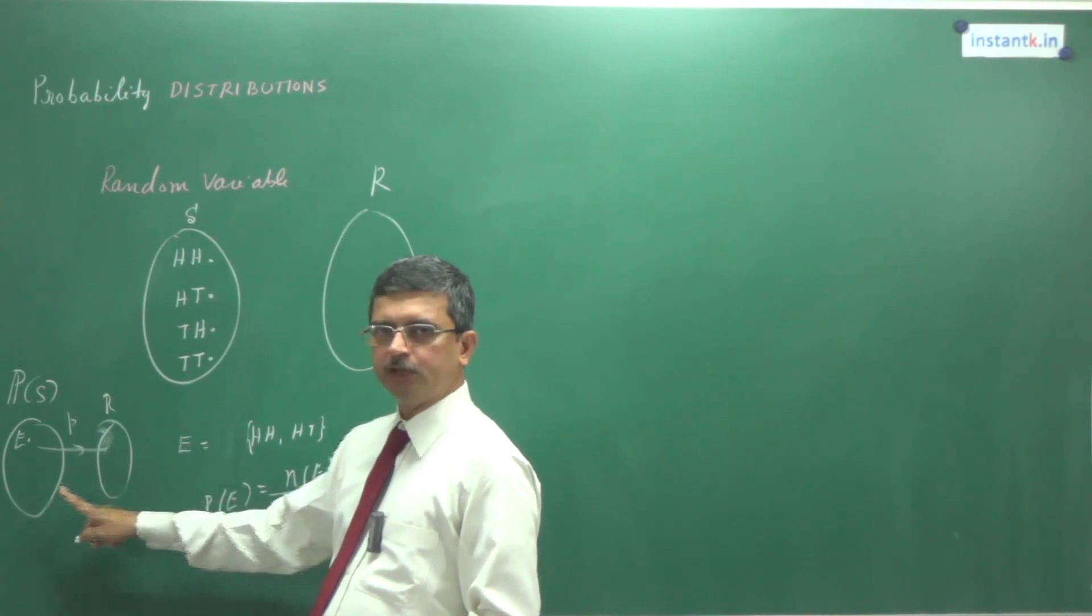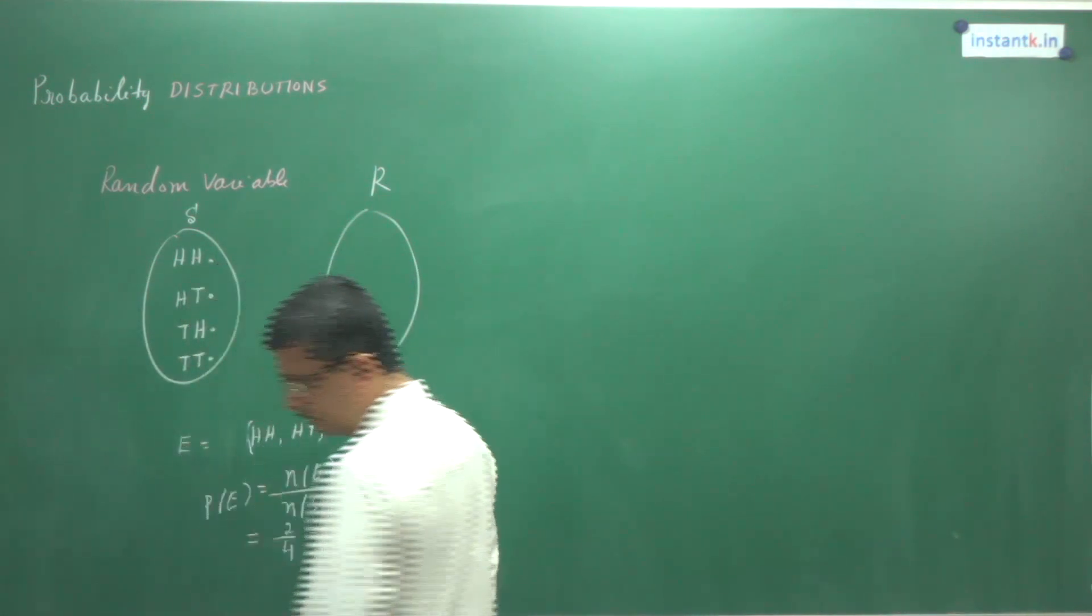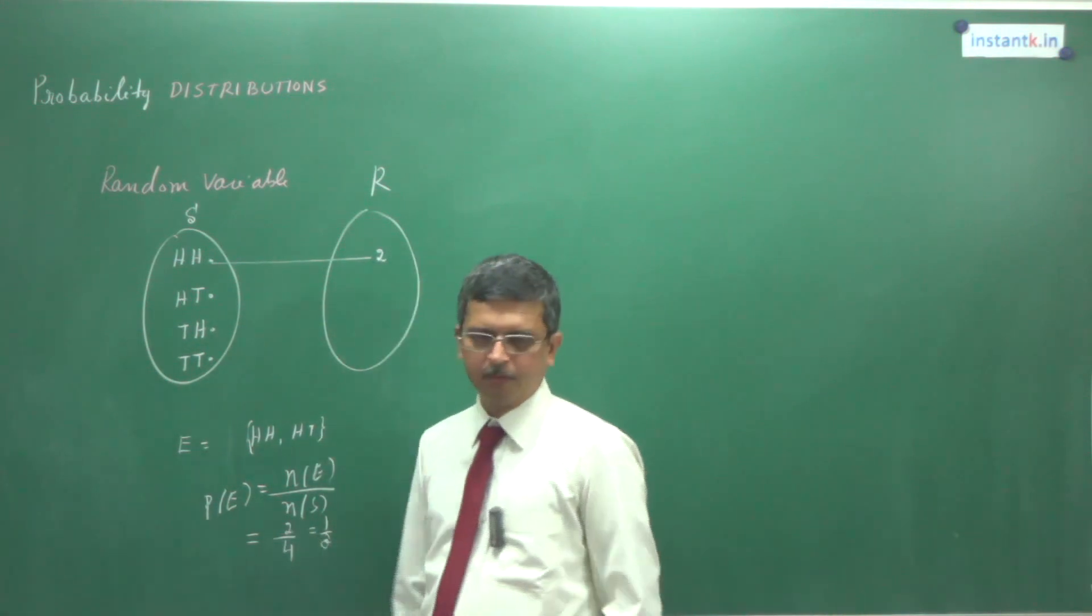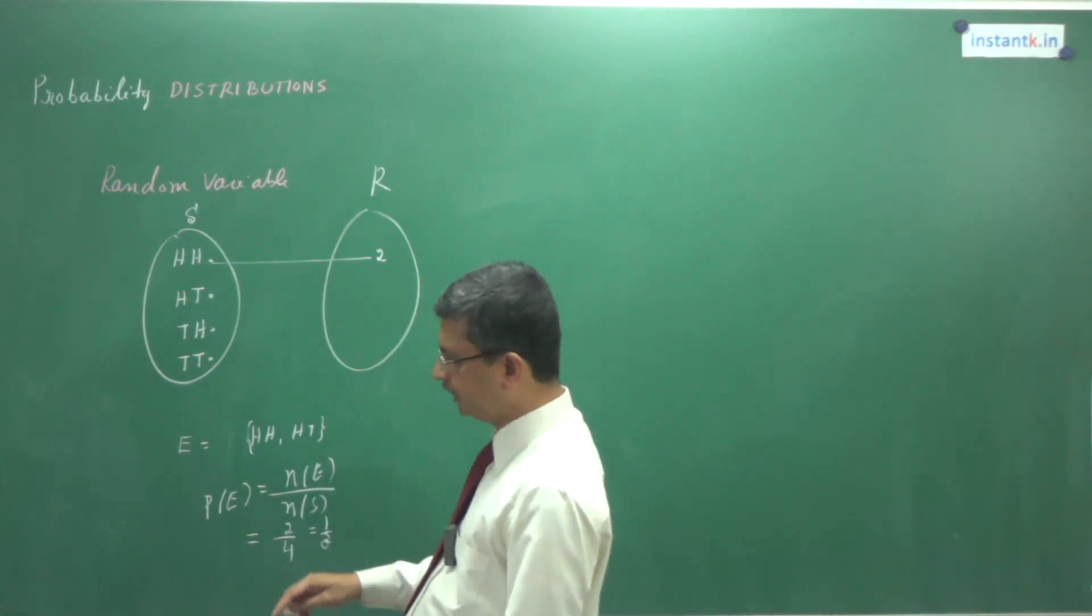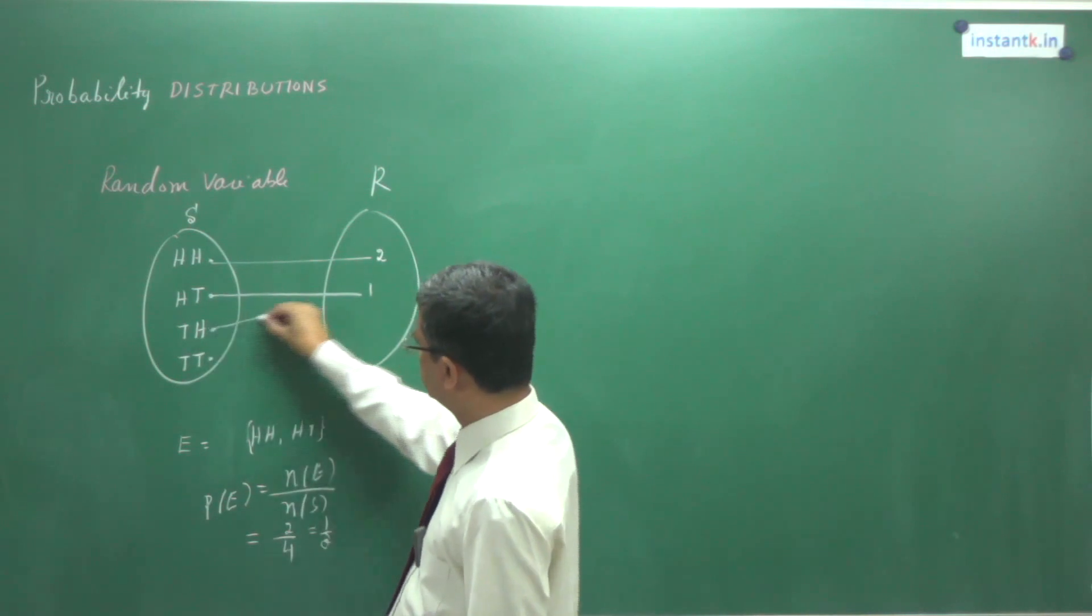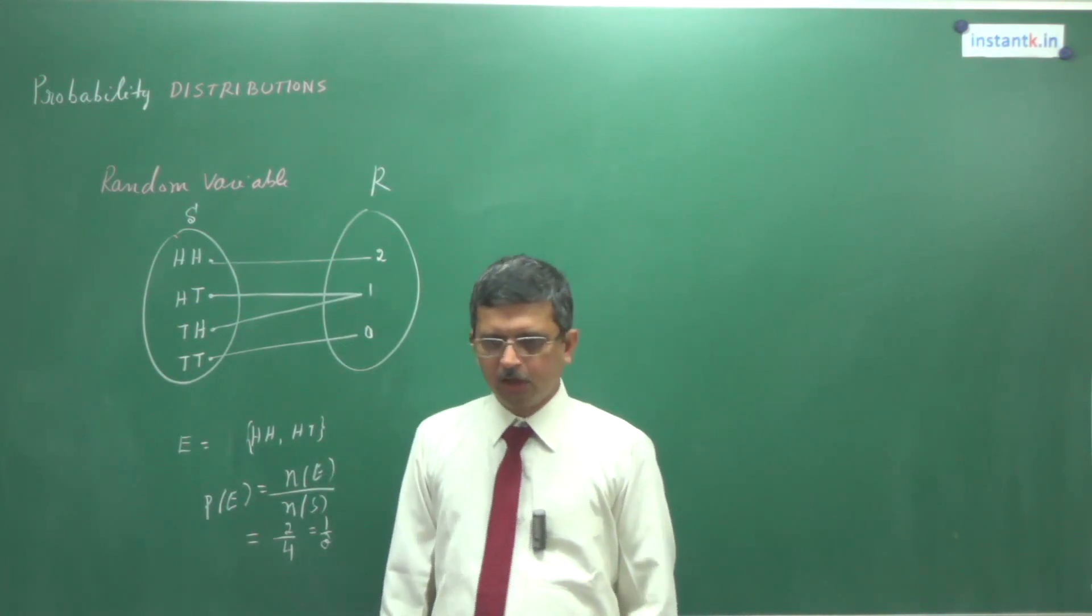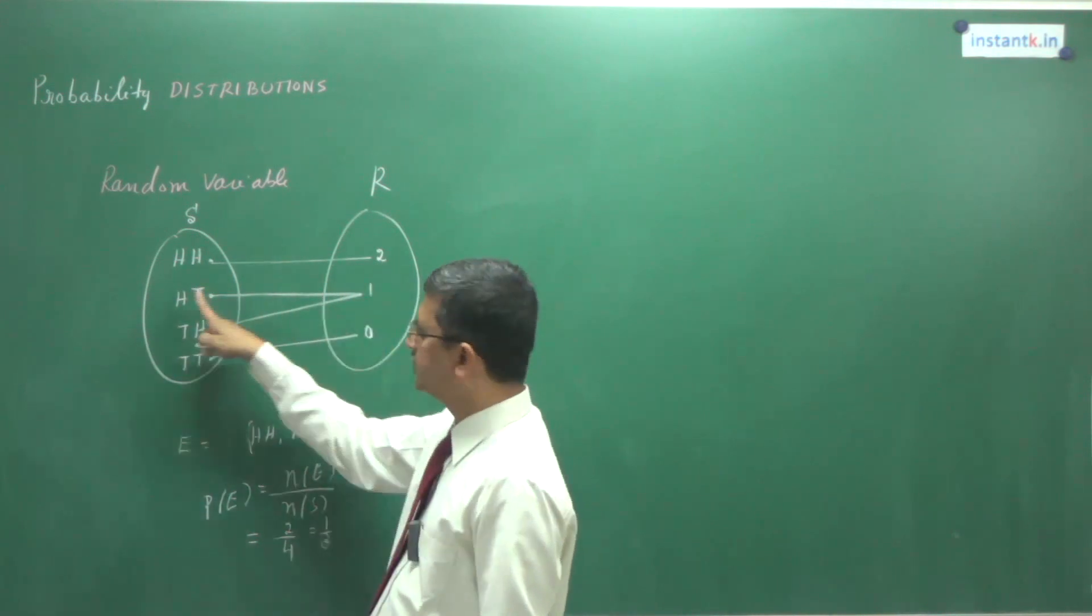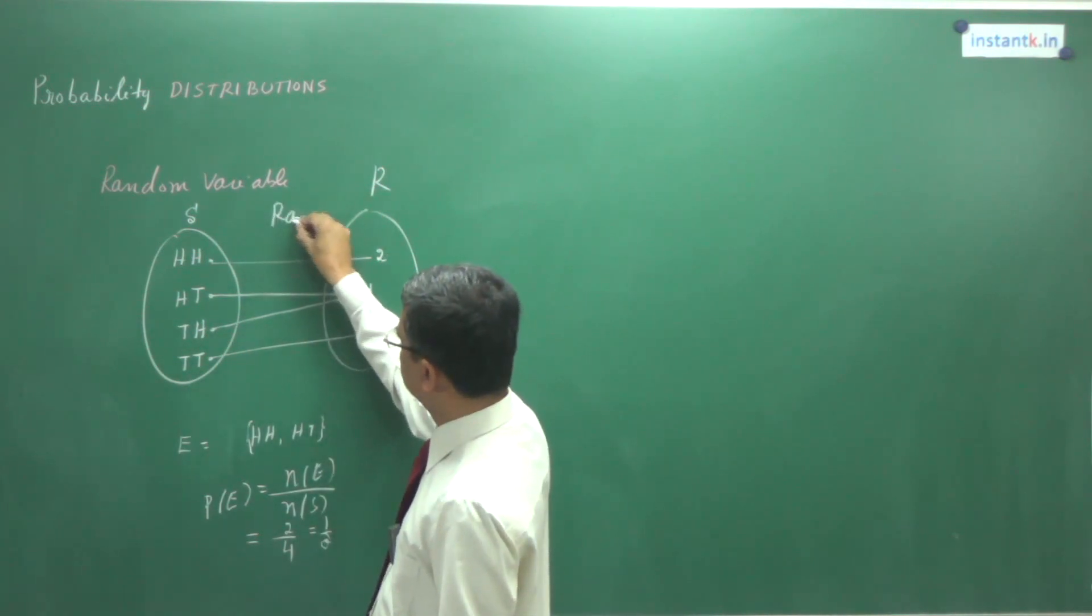But here, we are not associating for each event. Instead, for each element of S we associate. Now I associate for this some number randomly. I take this number as 2. But when you are associating probability assignment, that association is always non-negative and between 0 and 1. This is not necessary. For this I associate 1. For this I associate 1. For this I associate 0. So what is the assignment I did? What is the rule I applied? How many heads are there in this? There are 2, that I have taken as 2. How many heads are there? 1, 1. This is nothing but a random variable.